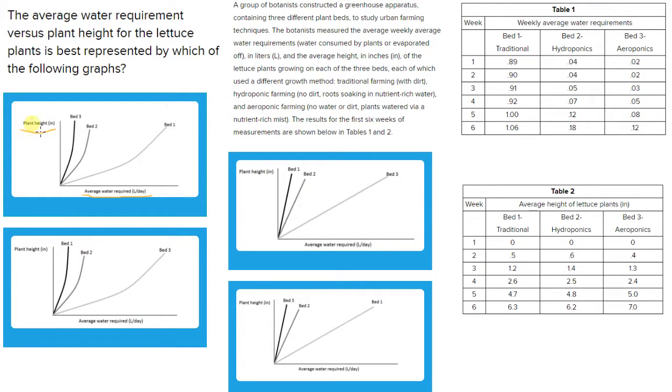We would expect then, if we're looking at plant height, that bed three, the aeroponic plants, were the highest, so we would expect bed three to have the highest height out of all of the plants here. Then if we look at bed one, we see that bed one ends at the second highest height of 6.3, and then bed two ends in third place with 6.2 inches as the height managed by the lettuce plants. So we expect the highest to be bed three, which we actually see is true in answer choice one. Then we see the second highest should be bed one, which we see is true, and then the third highest should be bed two, which is below it.